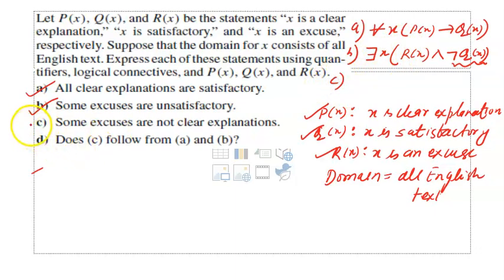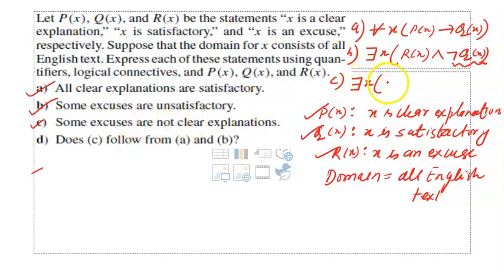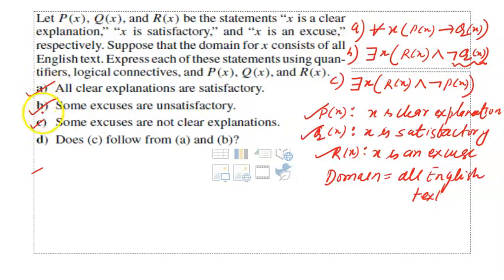The third statement is: some excuses are not clear explanations. Again we use the existential quantifier. There exists x, R(x) and negation of P(x). This is how we write statement one, statement two, and statement three.